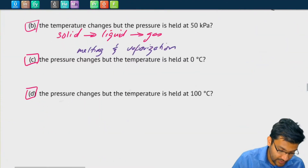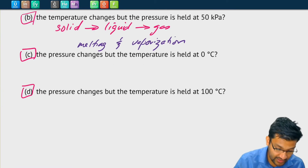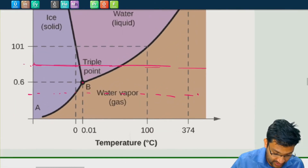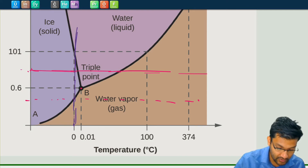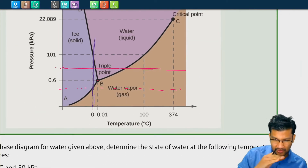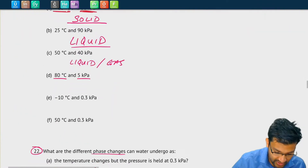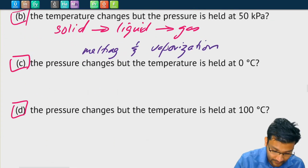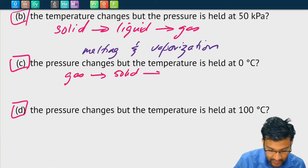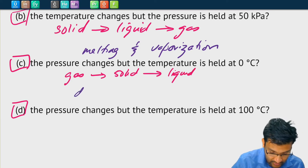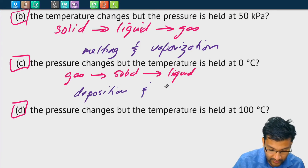Let's look at part C: the pressure changes, but the temperature is held constant at 0 degrees Celsius. At 0 degrees Celsius, as pressure increases we start with a gas, go to a solid, and then go to a liquid — which seems weird, but that's how water behaves. So gas to solid is deposition, and solid to liquid is melting.